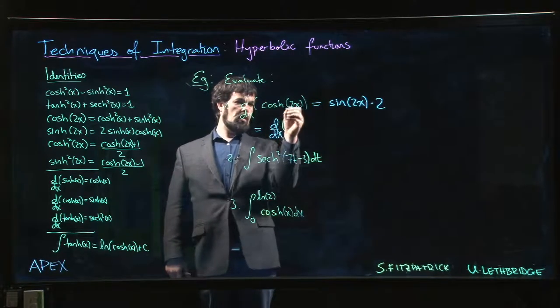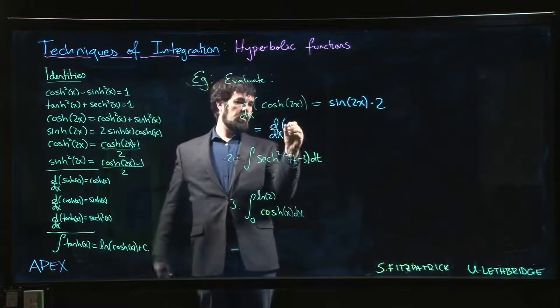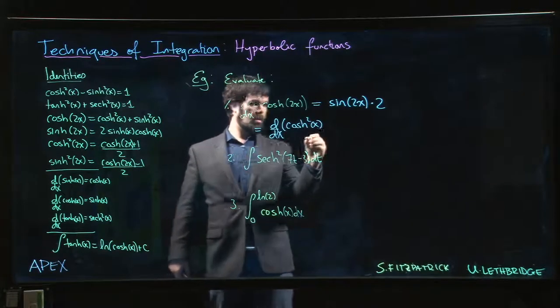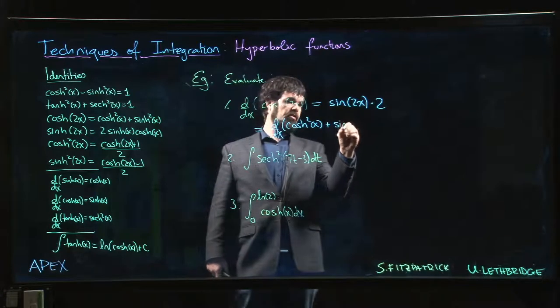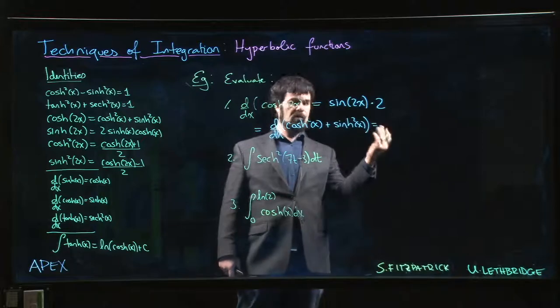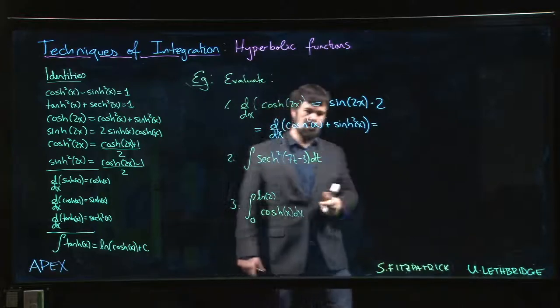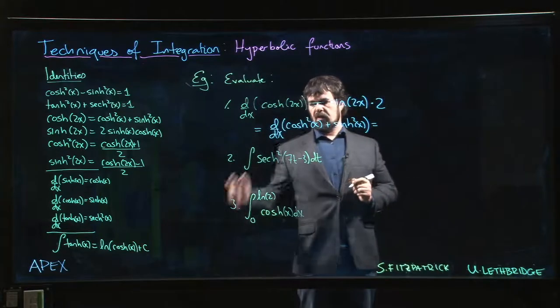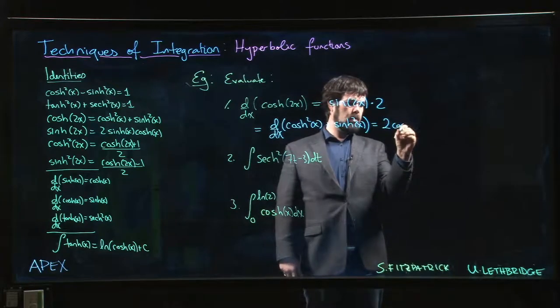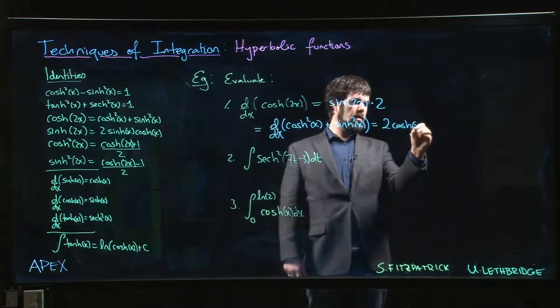On the other hand, we could also employ an identity here and say, well, cosh(2x) is cosh²(x) + sinh²(x). We're still doing chain rule, but we're doing it slightly differently. So here, power function on the outside—the power comes down, reduce the power by 1, multiply by the derivative of the inside. Derivative of hyperbolic cosine is hyperbolic sine.